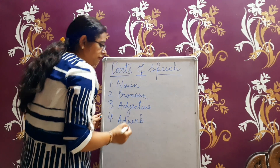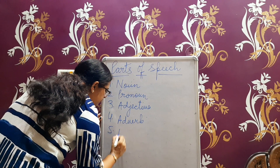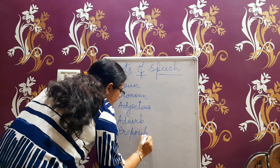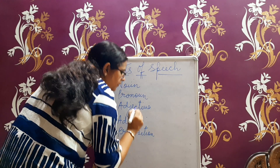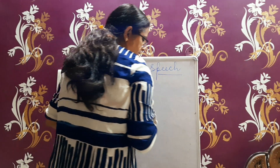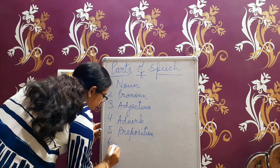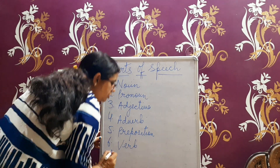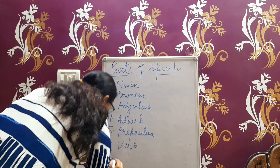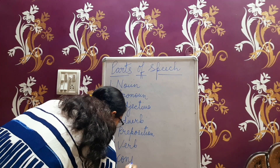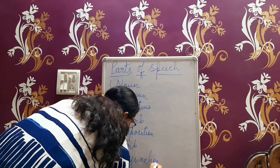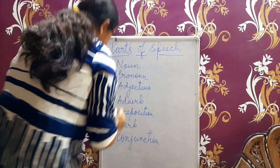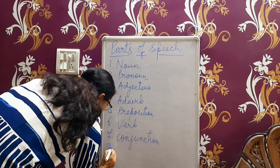Number five: preposition. Number six: verb. Number seven: conjunction. Number eight: interjection.